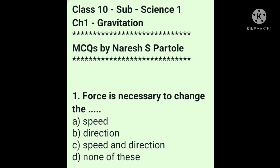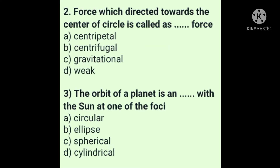If the motion of the object is vertically upward or downward, then the formula is F = m × g, where m is the mass of the object and g is acceleration due to gravity. Question 2: Force directed towards the center of a circle is called centripetal force. Answer is option A.